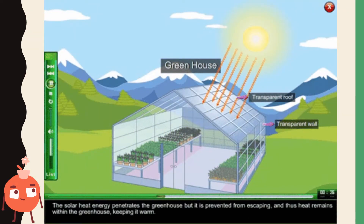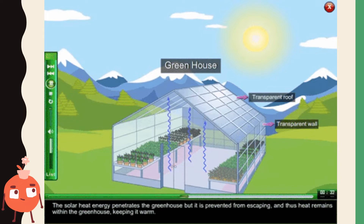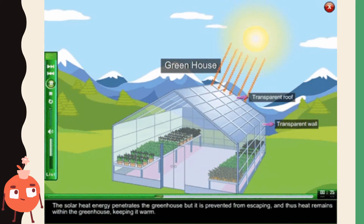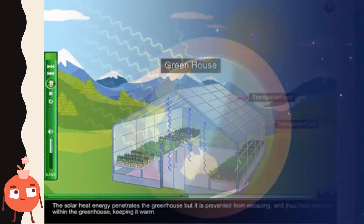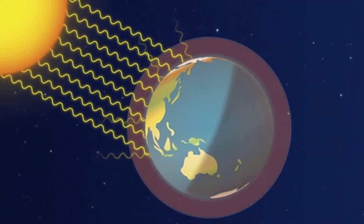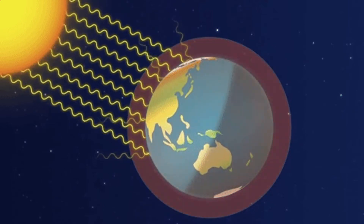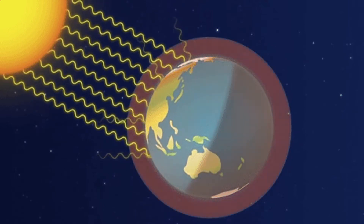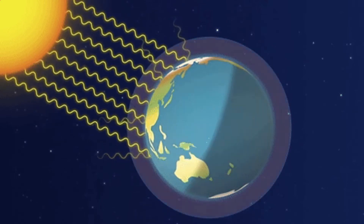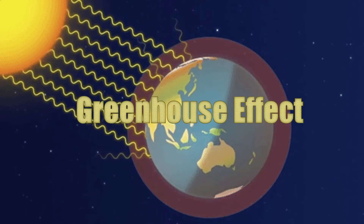The greenhouse is a warm place for plants and animals to grow. The sun shines into the greenhouse and warms it up. Then, a lot of the heat energy becomes trapped inside the greenhouse and it stays warm. The atmosphere of the Earth works in a very similar way. This is called the greenhouse effect.